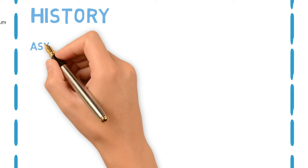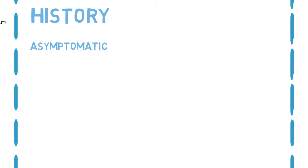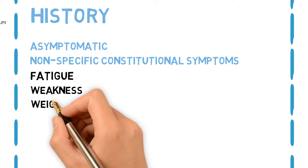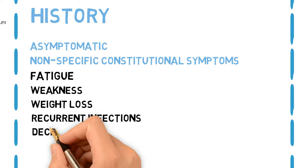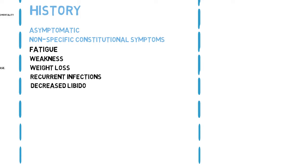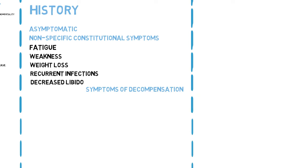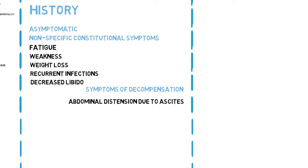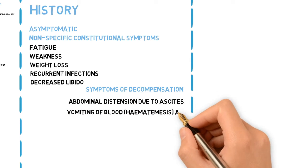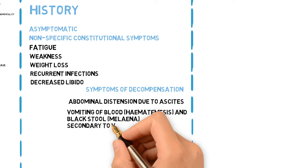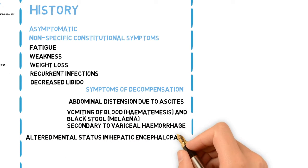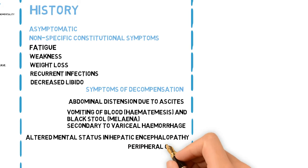History. Patients with cirrhosis may be asymptomatic or have nonspecific constitutional symptoms such as fatigue, weakness, and weight loss, as well as recurrent infections and decreased libido. Symptoms of decompensation include abdominal distention due to ascites, vomiting of blood (hematemesis) and black stool (melena) secondary to variceal hemorrhage, altered mental status in hepatic encephalopathy, peripheral edema, and jaundice.